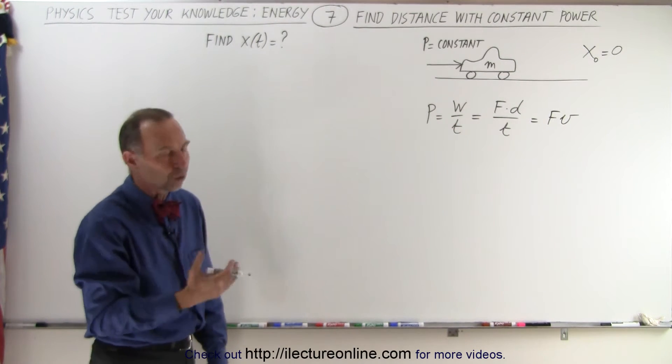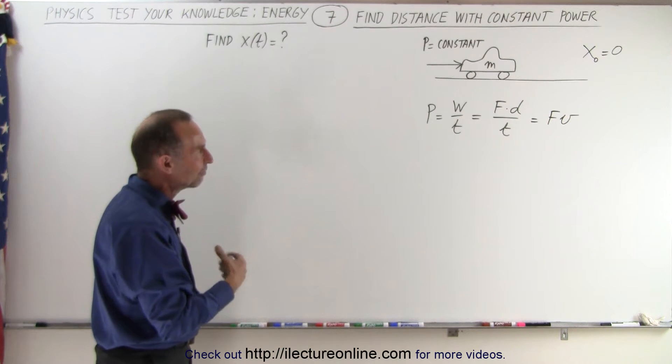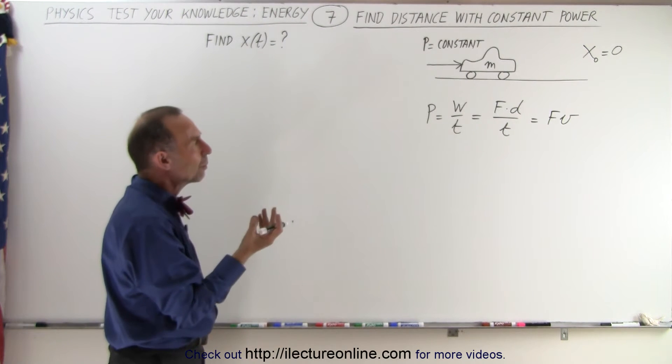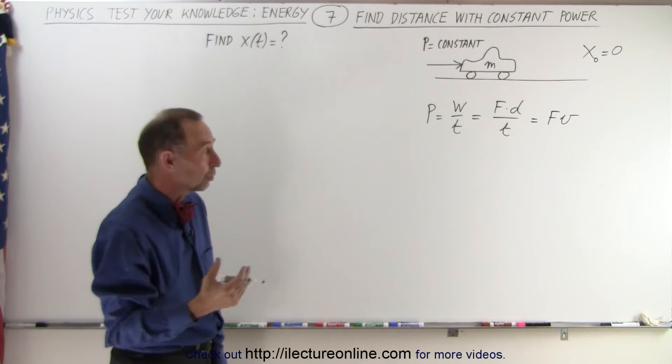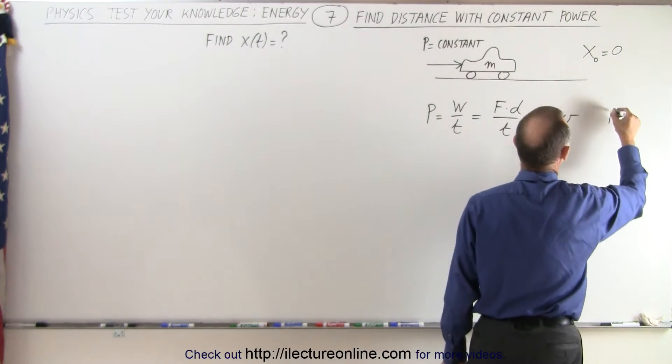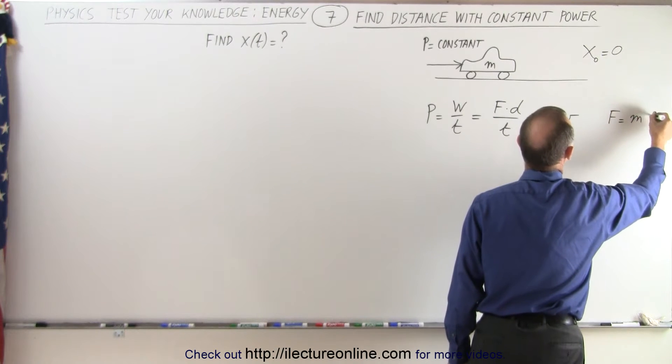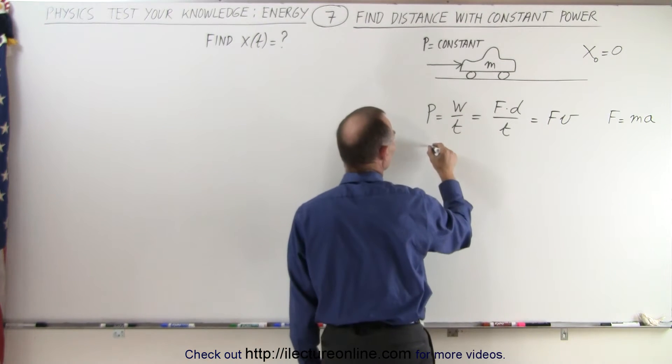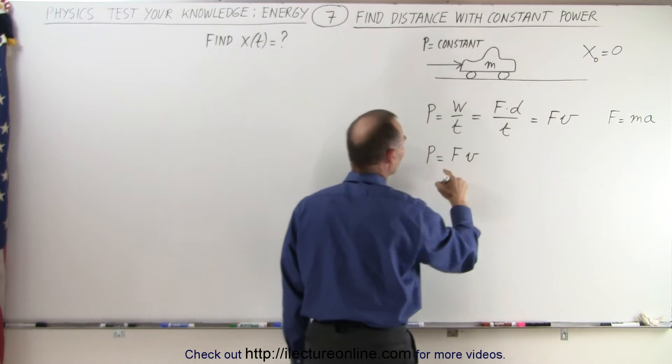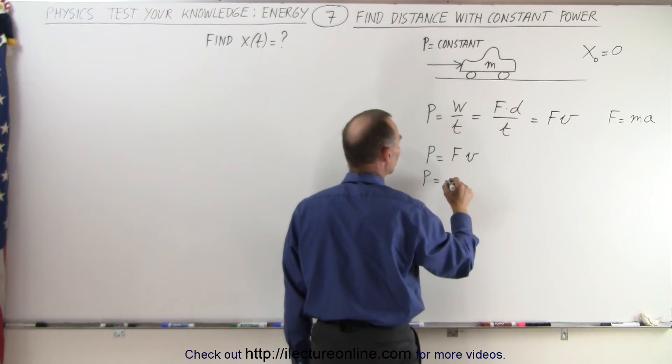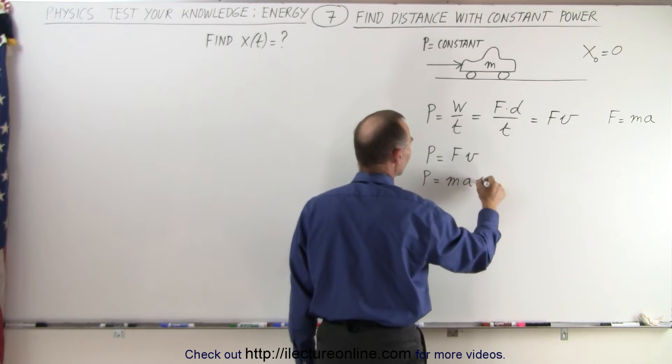So we know that there's some force applied, and that force is probably a variable. So now the next thing we want to do is replace force by what force is equal to in terms of mass times acceleration. We know that F is equal to mass times acceleration, which means that power being equal to force times velocity can now be written as power being equal to mass times acceleration times velocity.